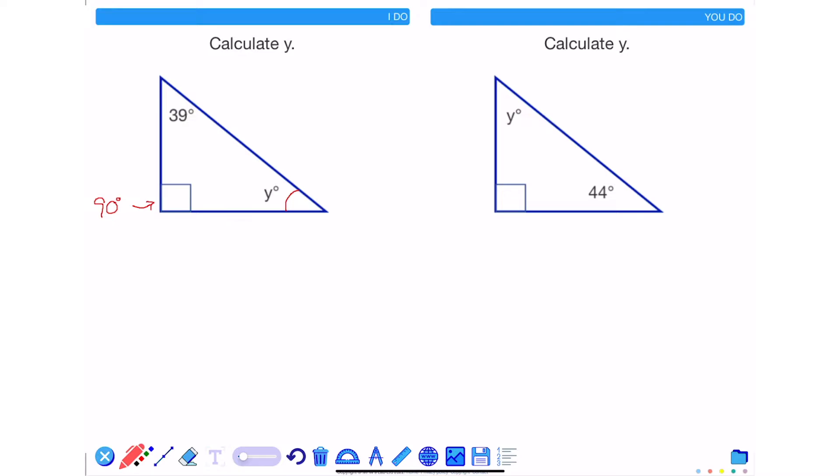In a previous video that I linked here we learnt that angles inside of a triangle add up to 180 degrees.